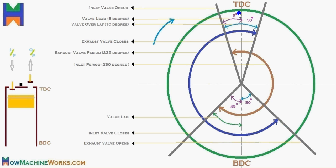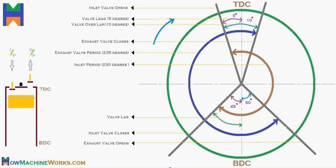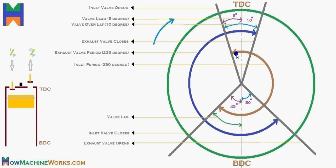Because of inertia and momentum, the valves operate under different conditions. Let's see how this practically happens with the help of this valve timing diagram. We have 360 degrees of crankshaft rotation shown here, and let's see how the inlet period works.